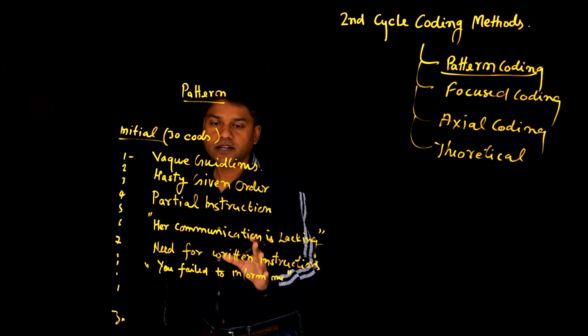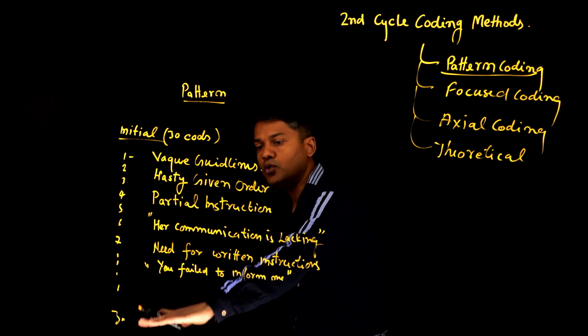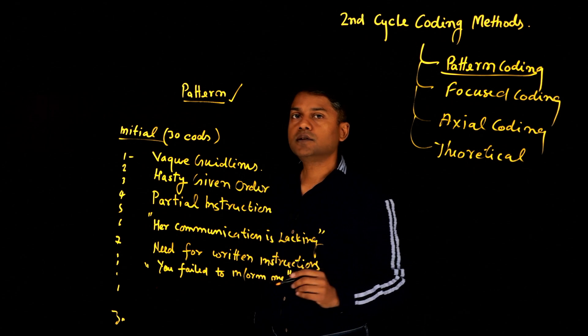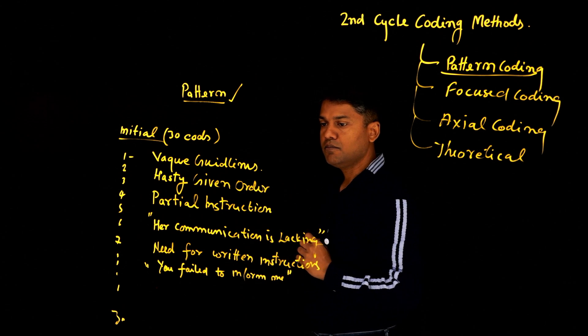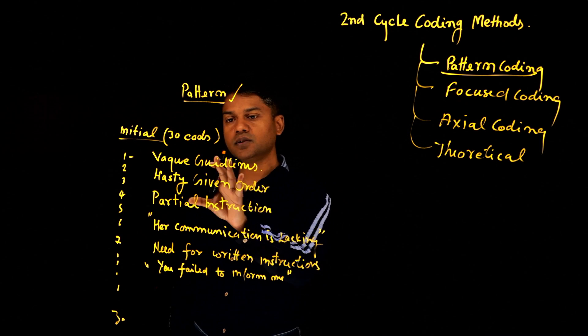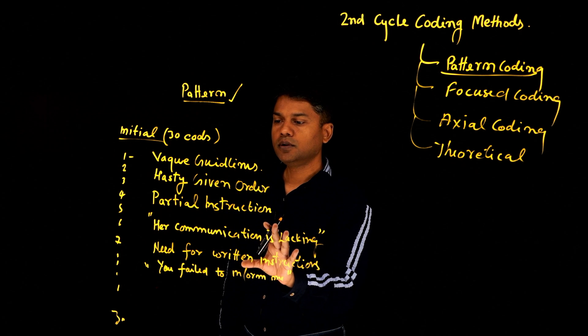So let's take for instance that these are initial codes and there is many more. But when I'm doing pattern coding, a second cycle of coding approach, what I'm looking, if you read all these codes, they seem to showing a pattern of communication.